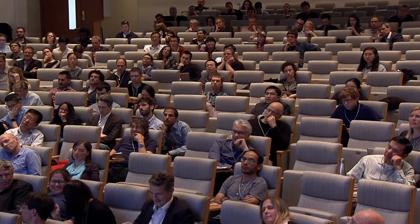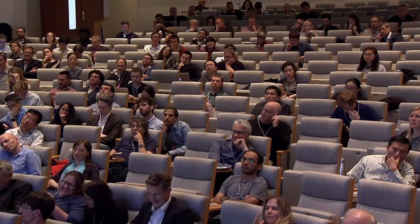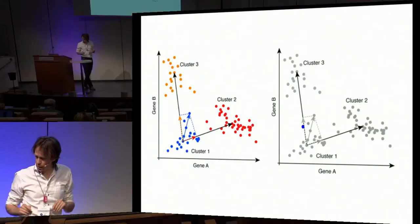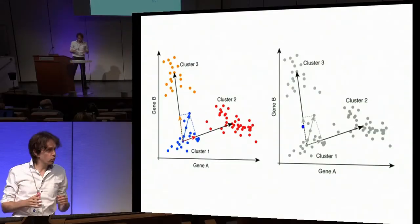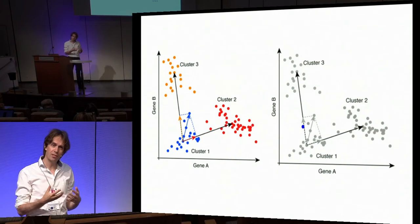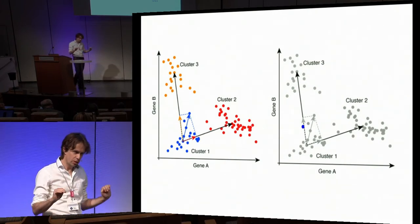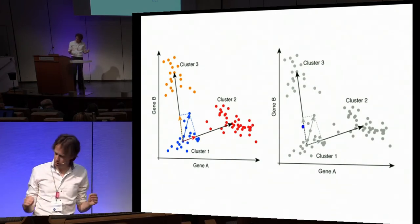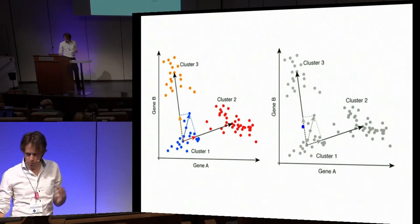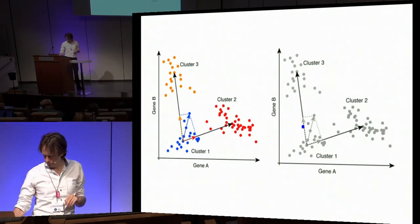The idea is that looking at one cell over time in great detail is basically the same, if you meet all the assumptions, as looking at many many cells at one time point. This is really nice because now you can get temporal information on data which is completely static. That's why we're so interested in doing this.